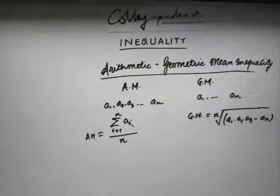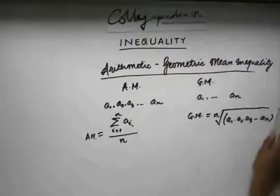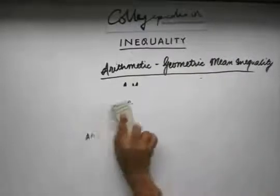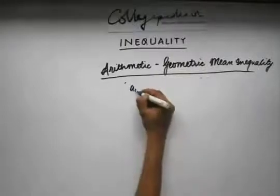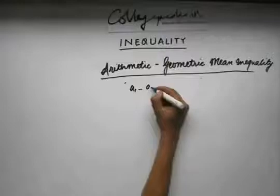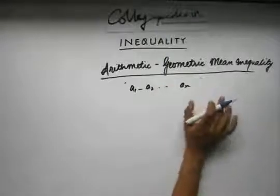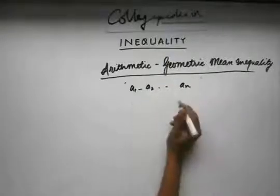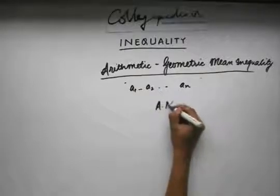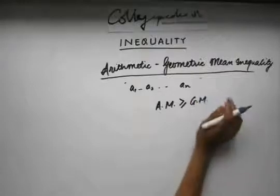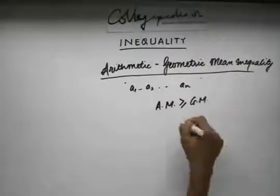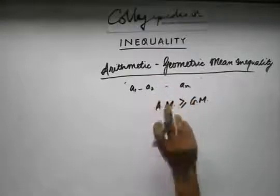What the Arithmetic Geometric Mean Inequality says is: given a set of numbers a1, a2, a3 till an, assuming that all of them are positive — remember, the first condition should be that a1, a2, an, all should be positive. Given that these numbers are positive, the Arithmetic Geometric Mean Inequality says that the Arithmetic Mean is always greater than or equal to the Geometric Mean. The equality condition holds when all the numbers are equal.